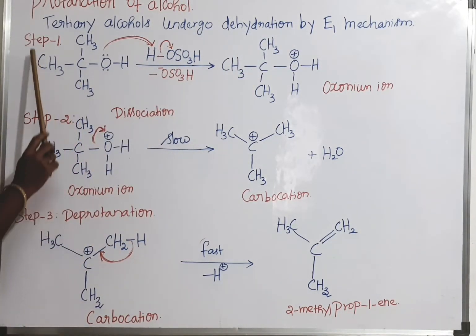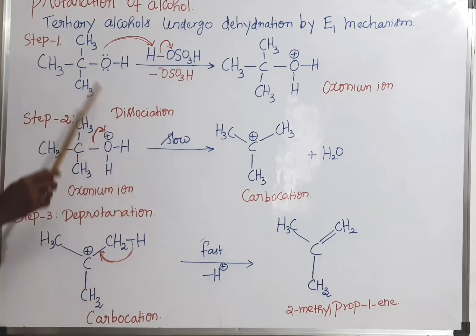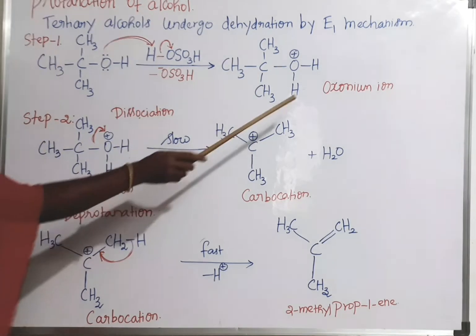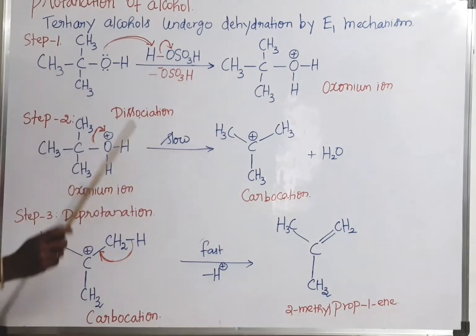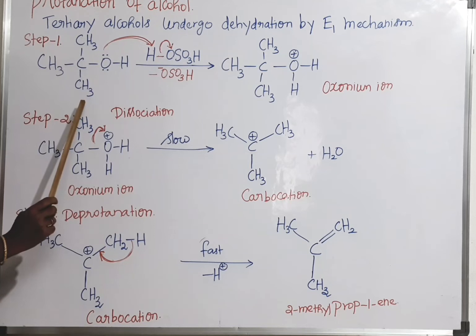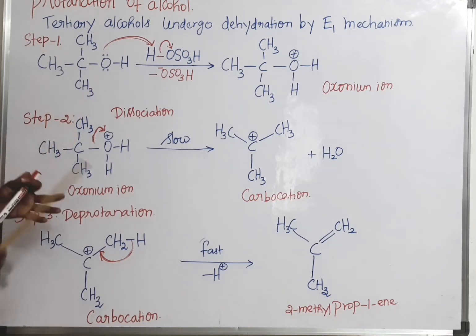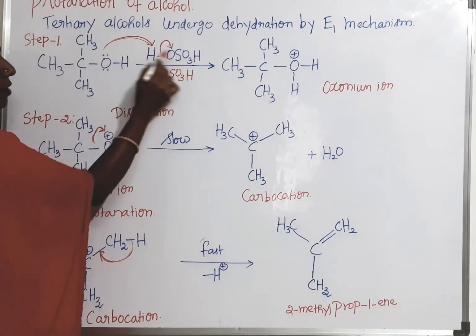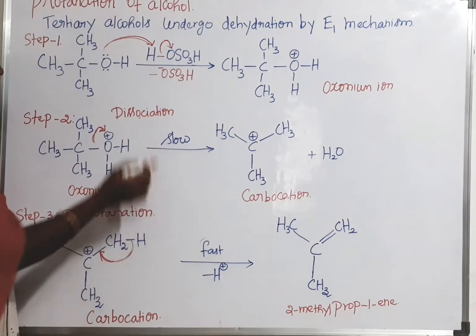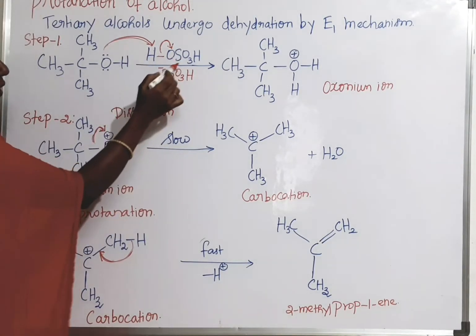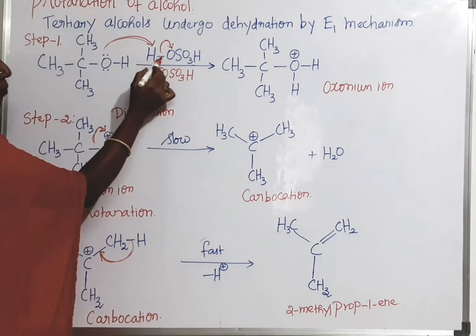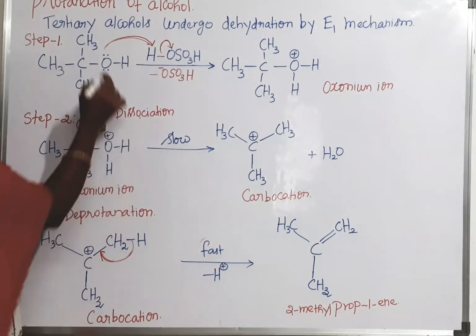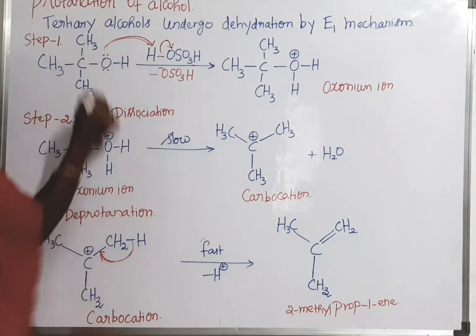In this mechanism there are three steps. The first step is the formation of the oxonium ion. Let us take the tertiary alcohol — this is the tertiary alcohol. It undergoes reaction with sulfuric acid, which we write as H–O–SO₃H.